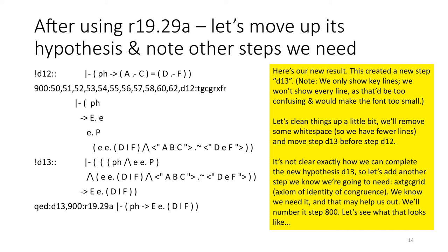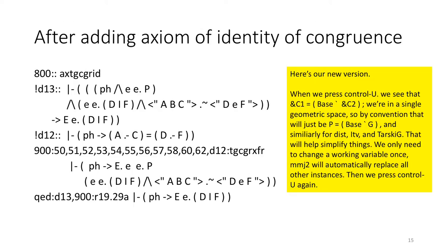AXTGCGRID, that's the axiom of identity of congruence. Remember, Schwabhauser specifically noted it. We know we need it. That may help us out. We'll number step 800 arbitrarily. Here's our new version. When we press CTRL-U, we'll see that ampersand C1 equals base prime ampersand C2. And we're in a single geometric space, so by convention, that's really just going to become P is equal to the base of G, and similar for dist, ITV, Tarski-G. That will help simplify things. We'll only need to change a working variable once. MMJ2 will automatically replace all other instances. Then we'll press CTRL-U again.